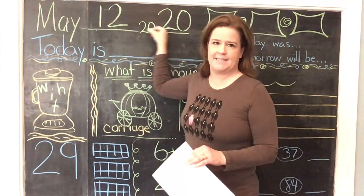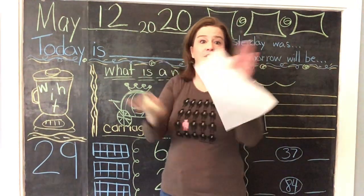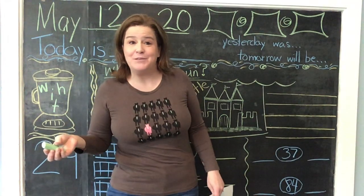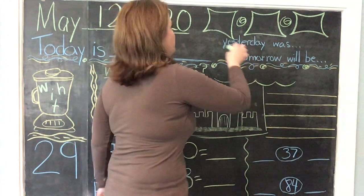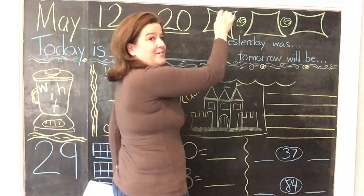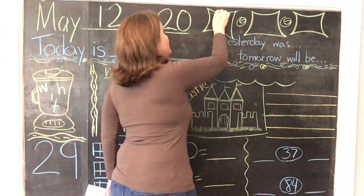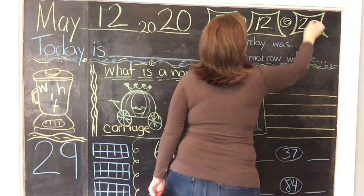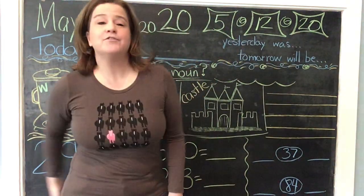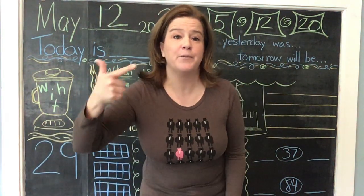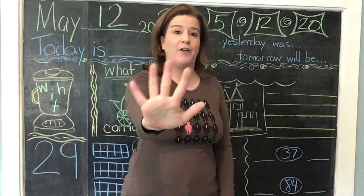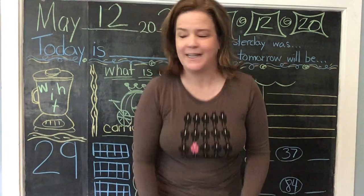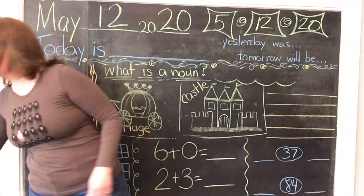We're going to take this date and change it — flip it, change it, rearrange it — to our Easy Peasy Lemon Squeezy date. Are you ready? Here we go. We have 5, 12, 20. It is 5/12/20 because January, February, March, April, May is 5. We steal the 12th and take the 20. So we have May 12th, 2020.